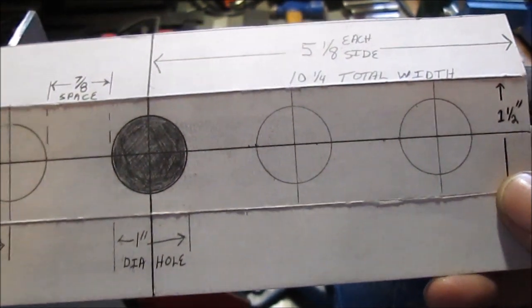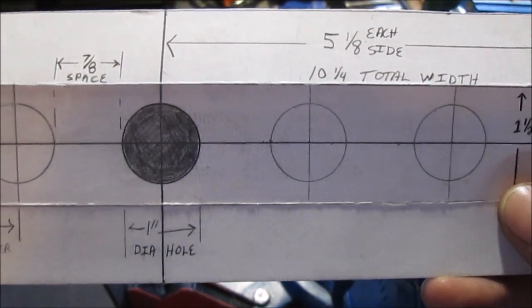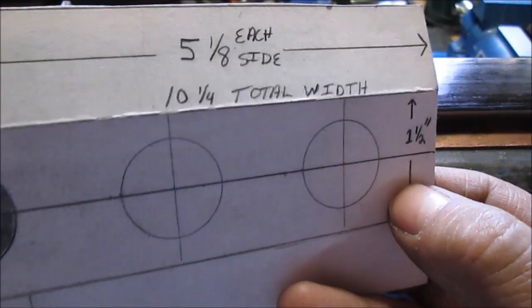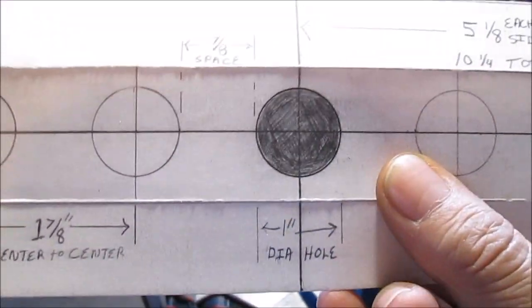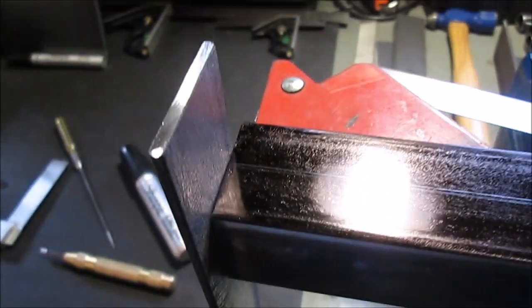Inch and a half wide metal, inch and seven-eighths to the center of the holes. There's seven-eighth spacing between the one-inch holes. It came out evenly, so I have an even space there, there, and there. I just got lucky. This is ten and a quarter inches long, or wide I should say.